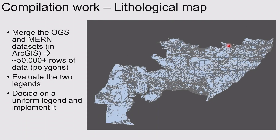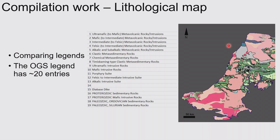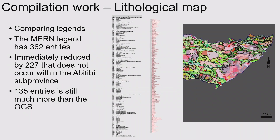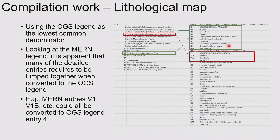This is just a look at all the polygons combined in one — there's a lot of data there, decades of work by geologists at the surveys. After combining that, it was time to decide how to merge it in terms of the lithologies. Here I'm showing you the legend for the OGS side, which is about 20 entries, and for the Quebec side it was 362 — but only 135 in the Abitibi — so still almost an order of magnitude different. That was the first step to try and cook that down and find a way to lump together the Quebec side and get it into the Ontario side.